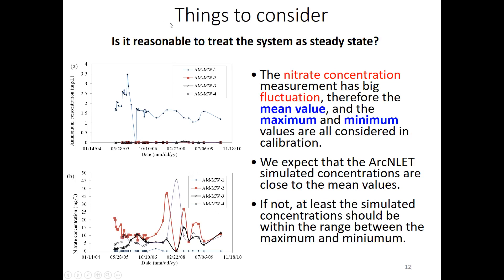We also need to evaluate whether it's reasonable to treat the transport system as steady state. There is clearly some variation in concentration over time, although we do not see a clear trend. There is significant fluctuation and we don't know the exact reason. For calibration, we will not only use the mean value — we will use the mean as the primary target, but also use maximum and minimum values as bounds. We expect the ArcLit-simulated concentration to be close to the mean, and at minimum within the range between minimum and maximum observed values.